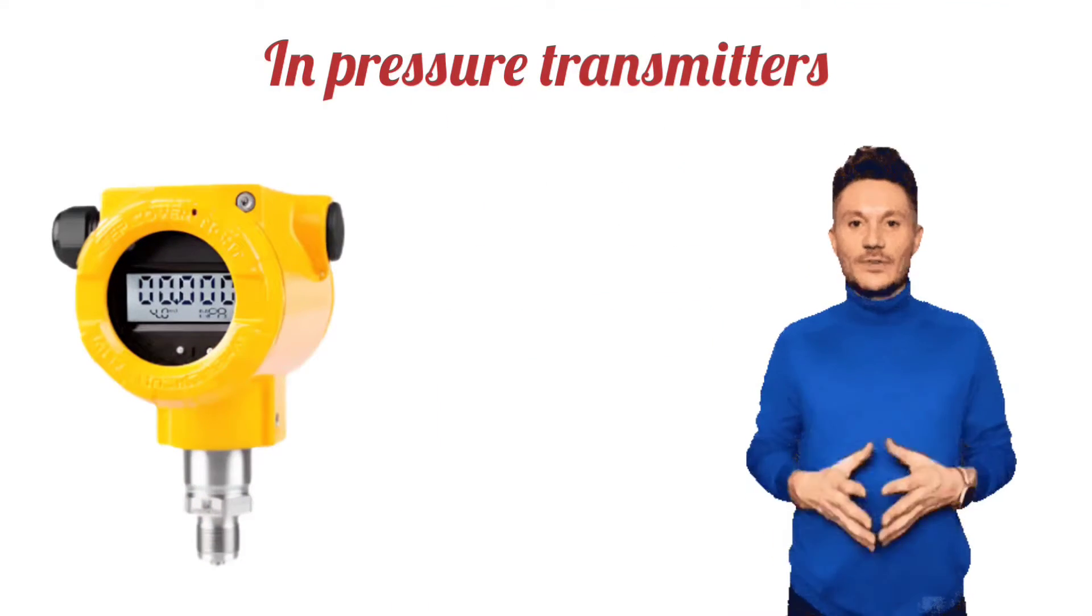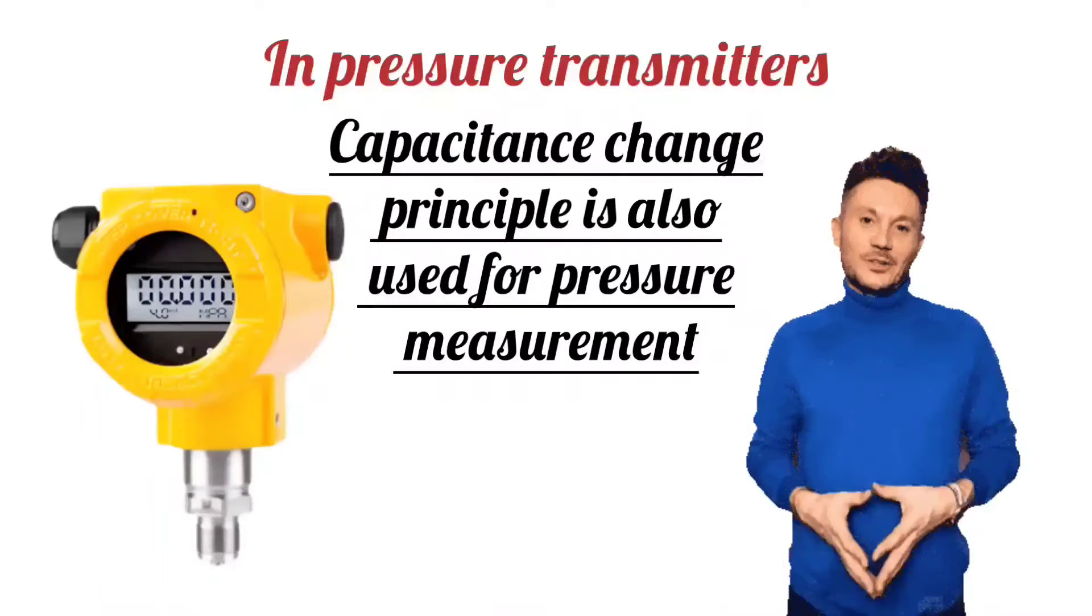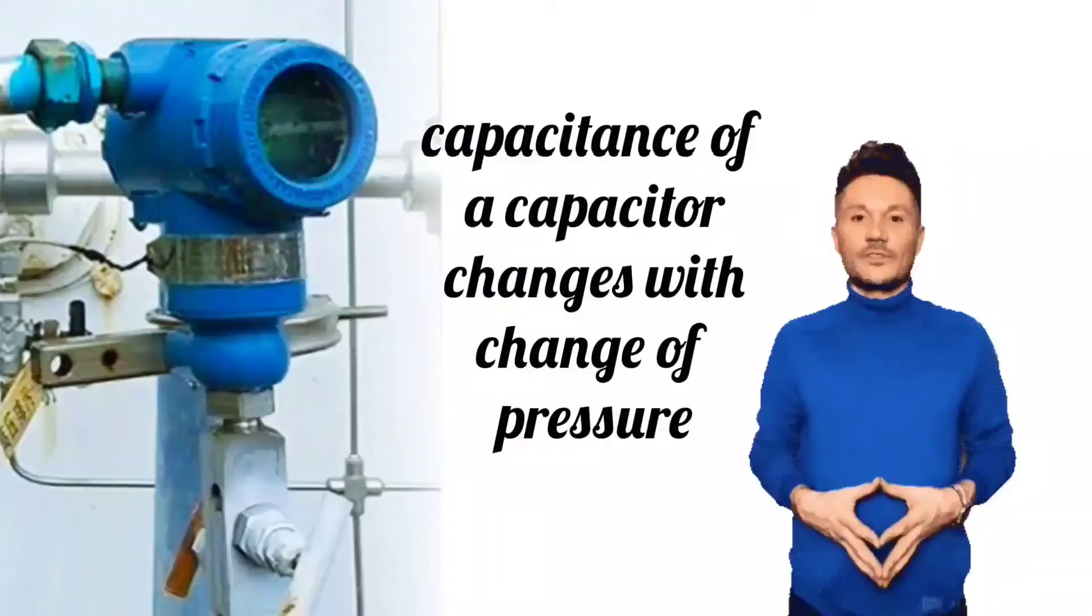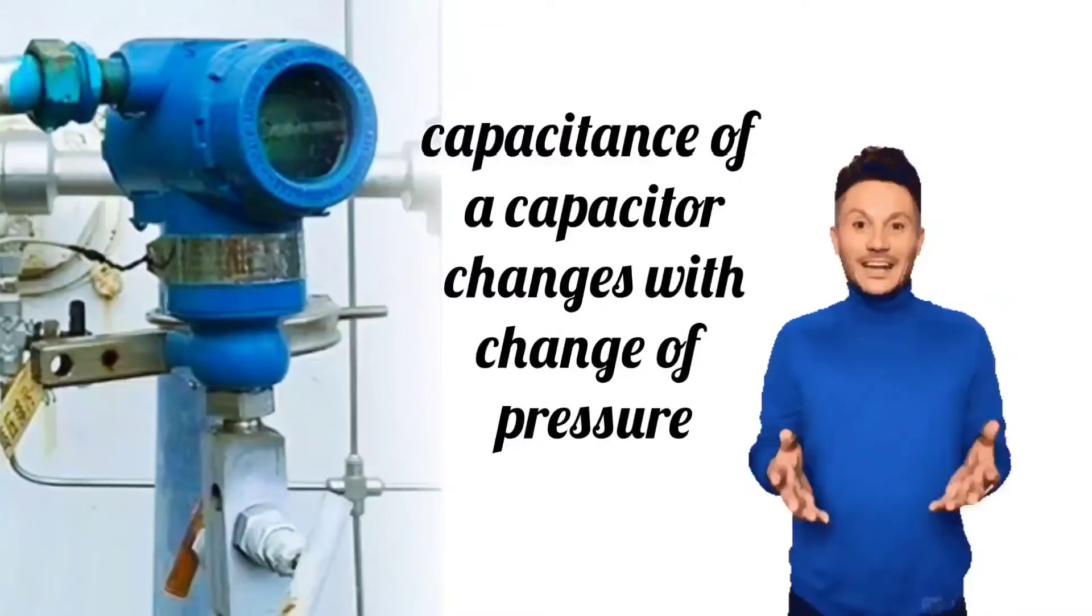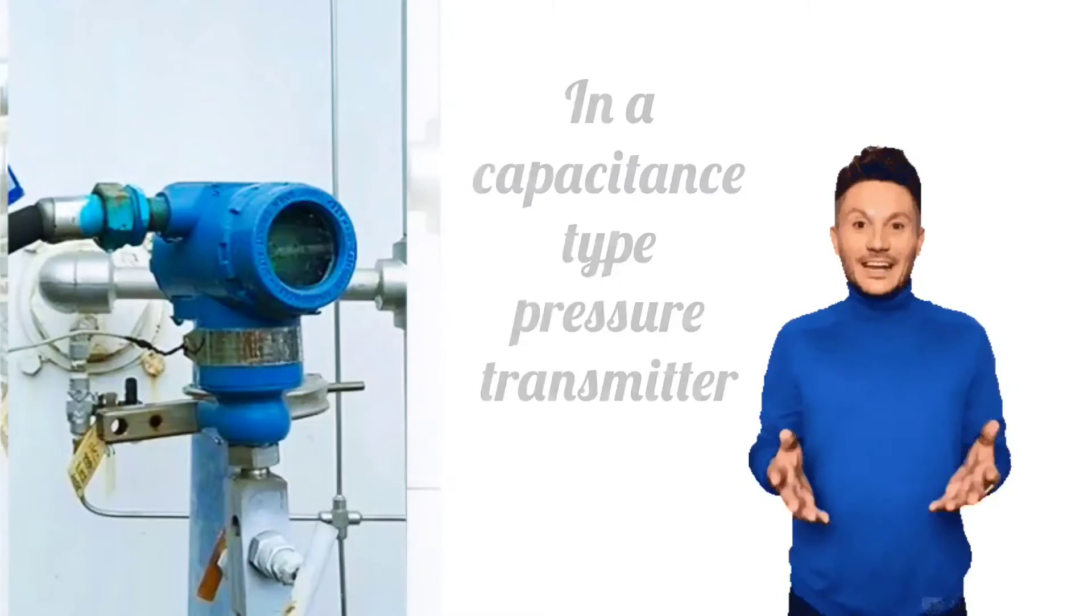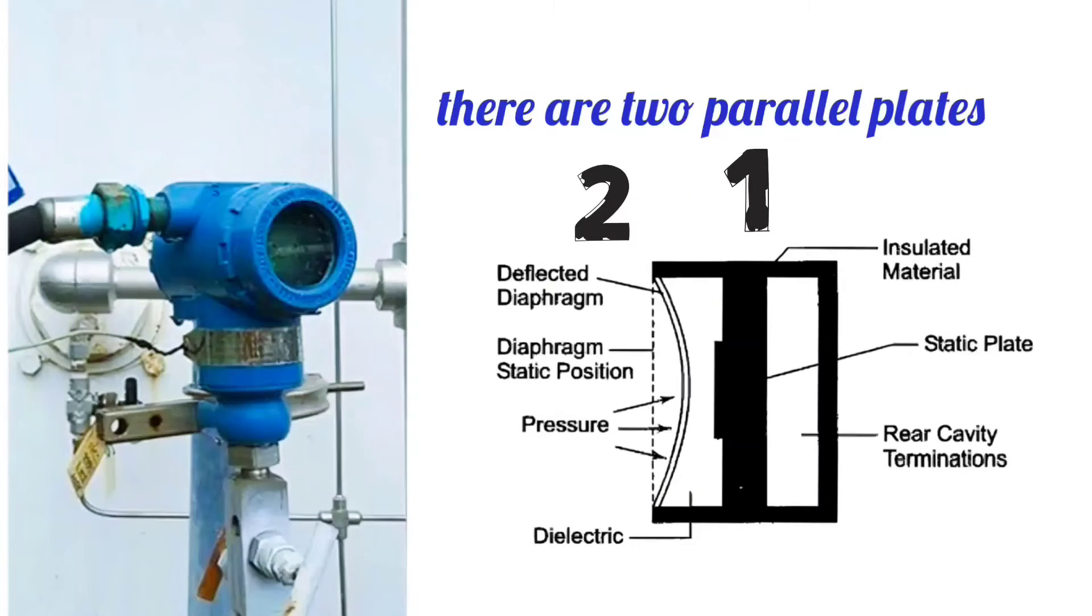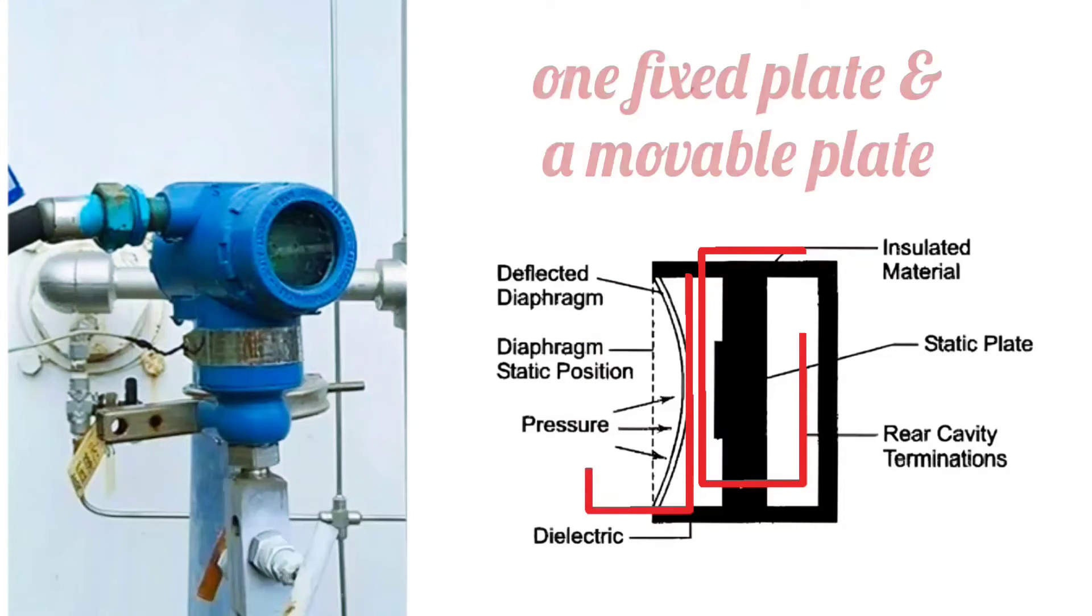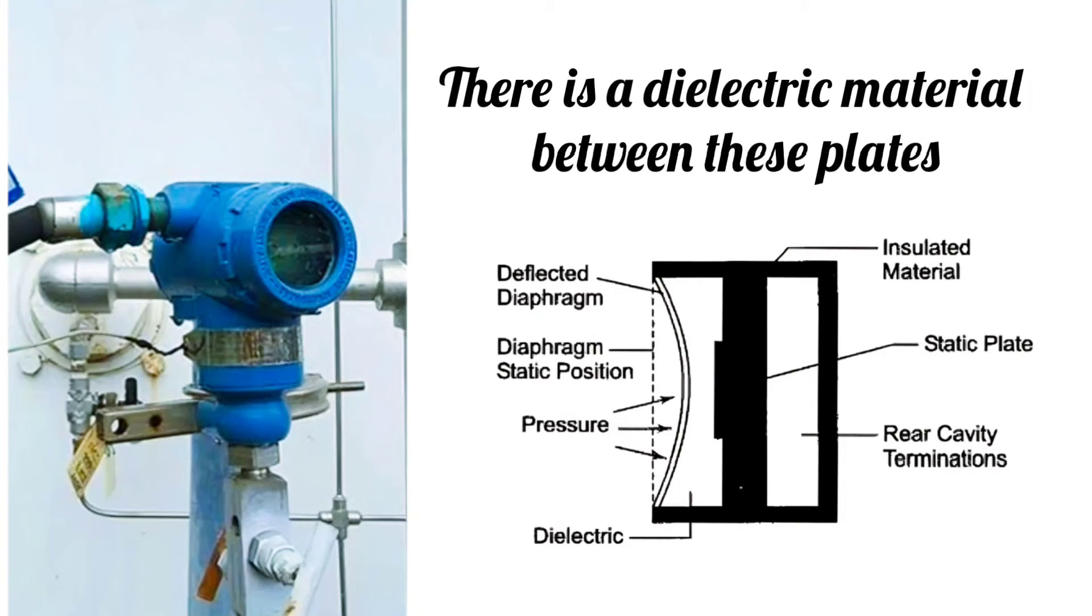In pressure transmitters, capacitance change principle is also used for pressure measurement. In this principle, the capacitance of a capacitor changes with the change of pressure. In a capacitance type pressure transmitter, there are two parallel plates - one fixed plate and one movable plate. There is a dielectric material filled between these plates.